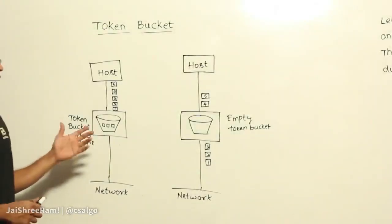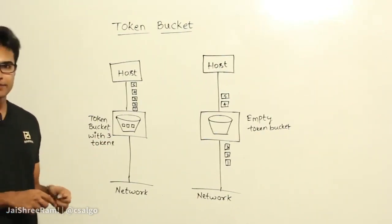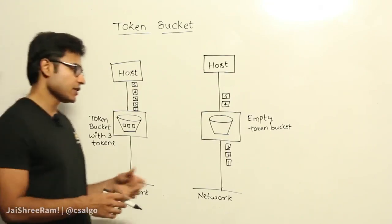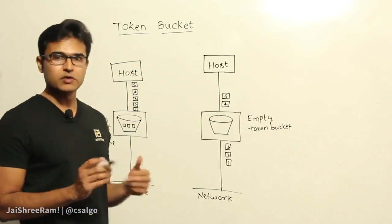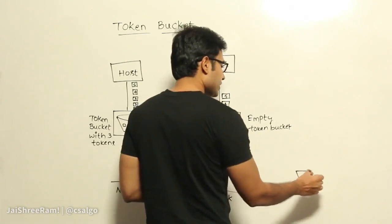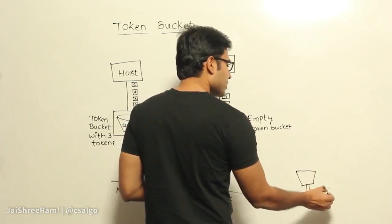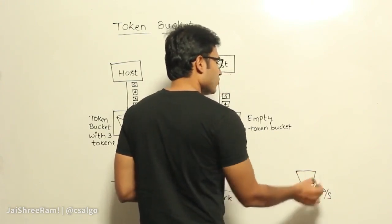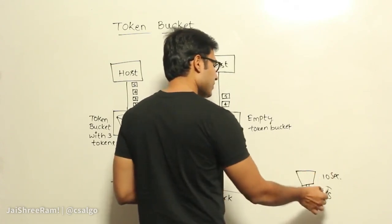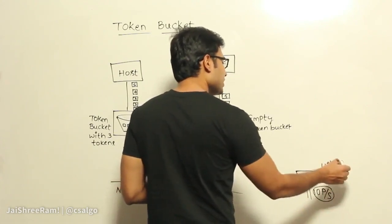One of the disadvantages of the leaky bucket is that if the sender is idle, the unused capacity is lost. For example, we have negotiated that a sender can send 10 packets per second. Now let us say for the first 10 seconds the sender was idle, which means it didn't use this capacity at all. And at the 11th second the sender wants to send 100 packets.